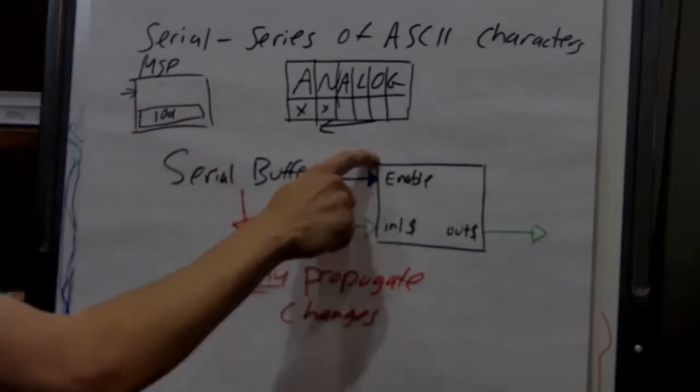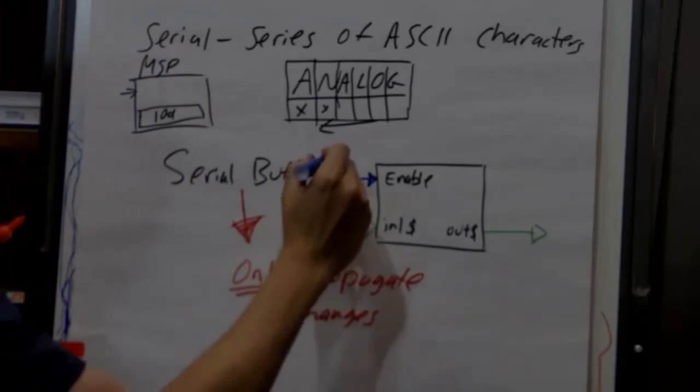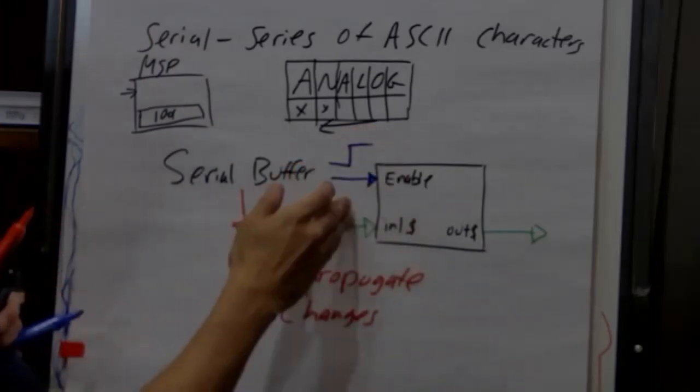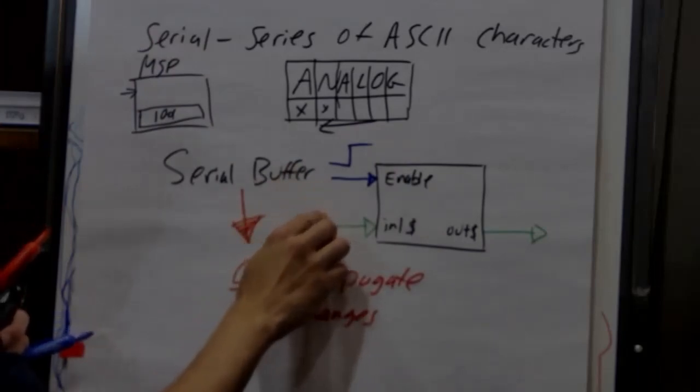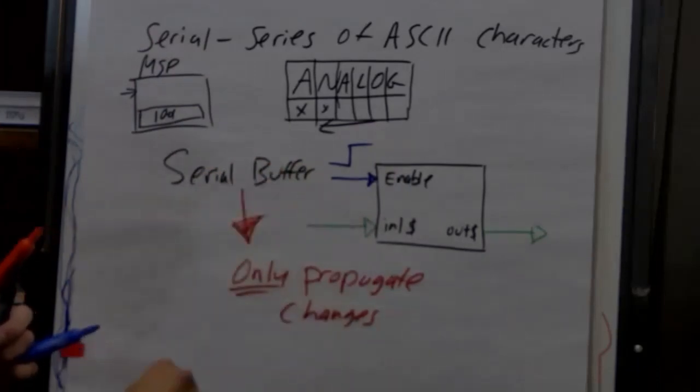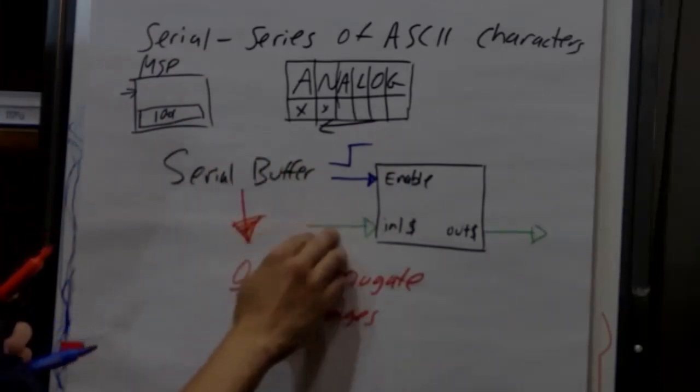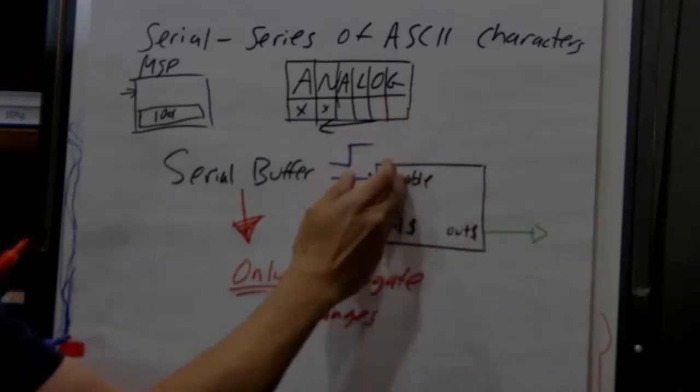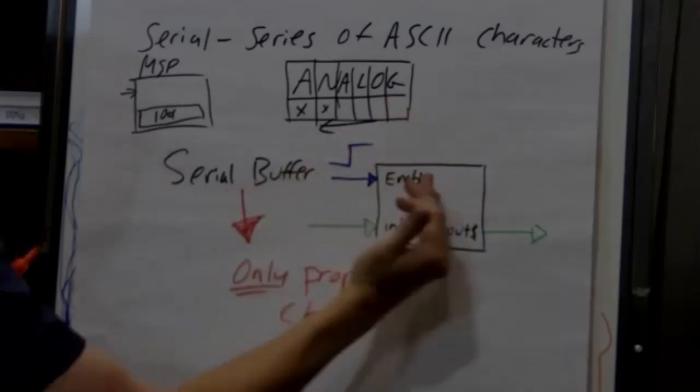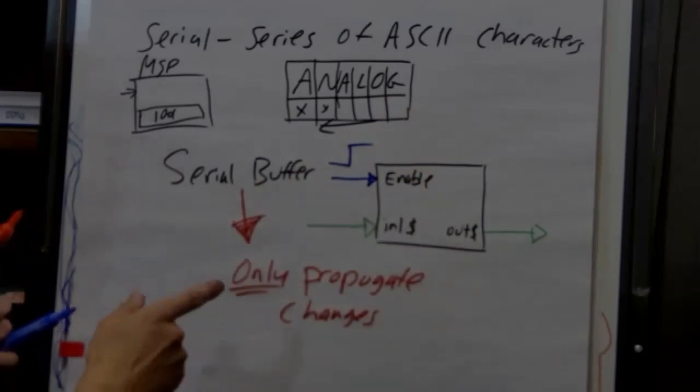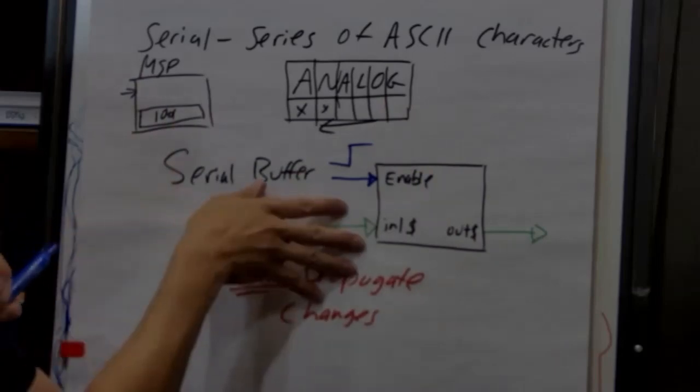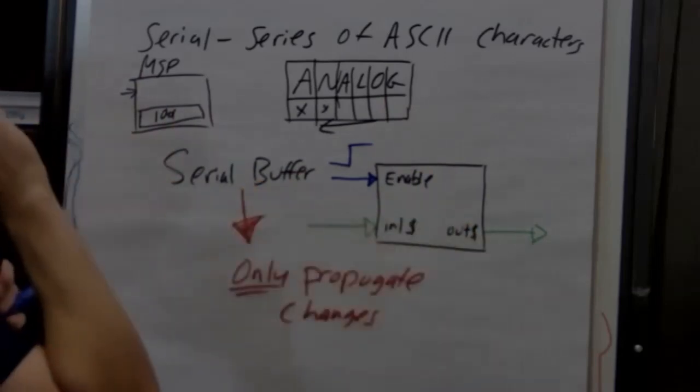When that enable line is high, at that point anything that changes here—be it analog or serial, but let's just look at serial—any new serial data that comes in will go right through. When the gate closes or the buffer is not enabled, the gate stops it and it blocks it. Now, if you have a signal that's got MSP, make string permanent, and that's sitting there waiting to be let through...